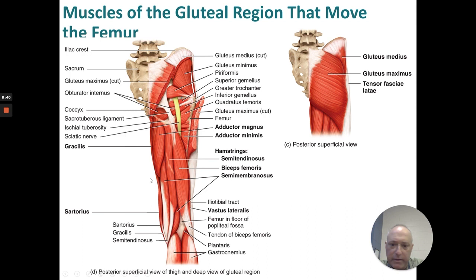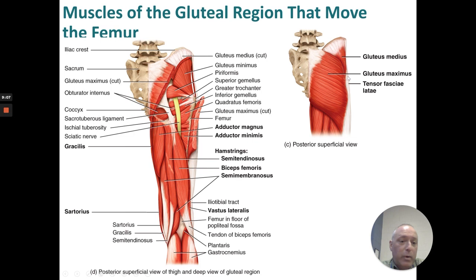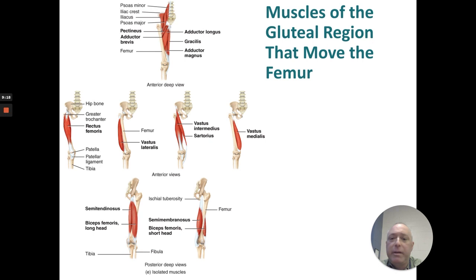More muscles of the gluteal region that move the femur: gracilis, sartorius, adductor magnus, adductor minimus, and the hamstrings — semitendinus, biceps femoris, and semimembranosus. Distally, the vastus lateralis. The gluteal region shows gluteus medius, gluteus maximus, and tensor fasciae latae. Muscles that move the femur also include pectineus, adductor brevis, adductor longus, gracilis, and adductor magnus. Anterior views show rectus femoris, vastus lateralis, vastus intermedius, sartorius, and vastus medialis.